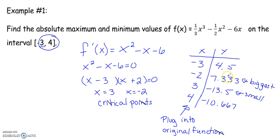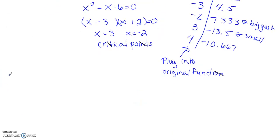My absolute max is not going to be 7.33, but my absolute max will be at x equals negative 2. So I have an absolute max at x equals negative 2.